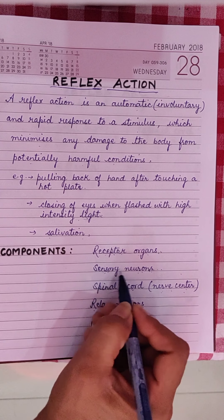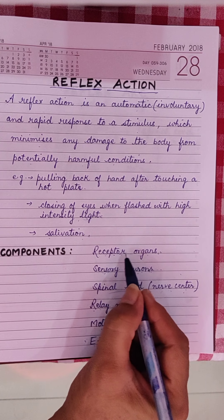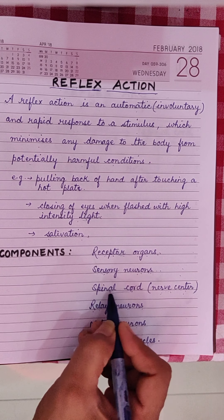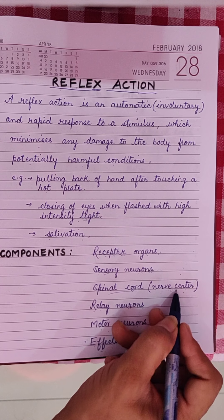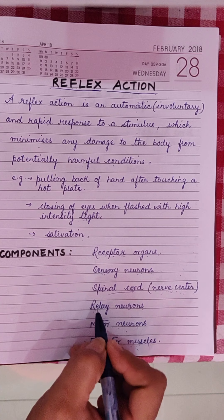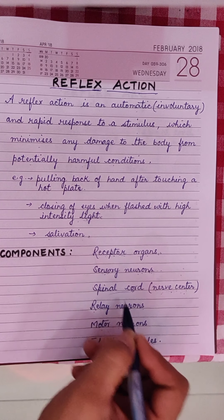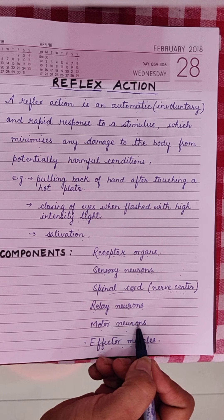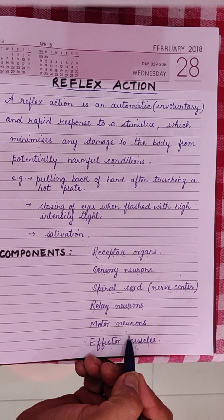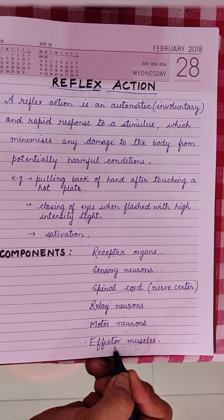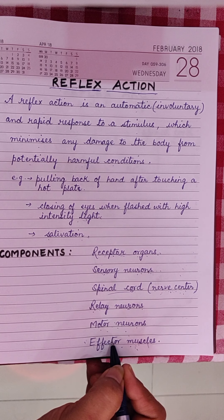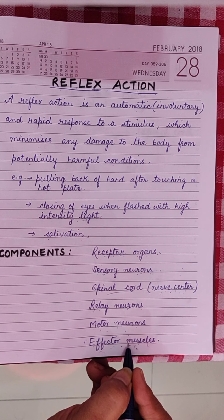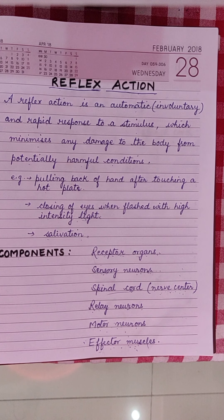The second component of a reflex action are the sensory neurons — neurons which carry messages from the receptor organs to the spinal cord and the brain. The spinal cord, part of the central nervous system, acts as the main nerve center. Relay neurons transmit messages from the sensory neurons to the next motor neurons. Motor neurons carry messages from the spinal cord and brain to the muscles. Effector muscles are those capable of undergoing contraction when they receive a nerve impulse, causing movement of that particular body part.